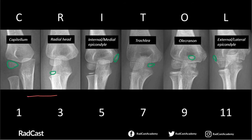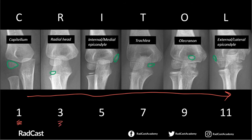What these letters represent is the order in which the ossification centres appear, and this sequence is key. Specifically, the capitellum is first, typically at around 1 year of age. Then the radial head around 3 years, the internal or medial epicondyle at 5 years, the trochlea at 7 years on average, the olecranon at 9 years on average, and finally at around 11 years of age, the lateral or external epicondyle. Don't worry specifically about the years — these are varied averages. What's key is the order.